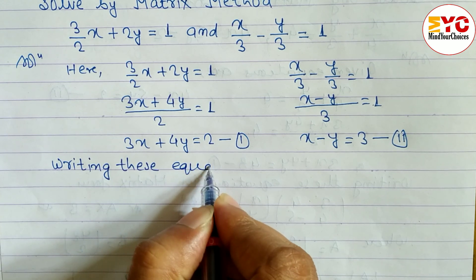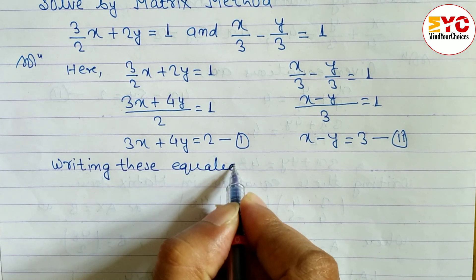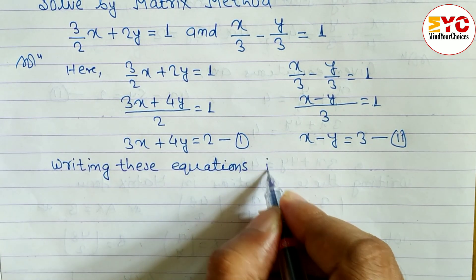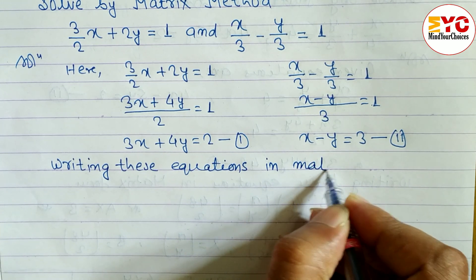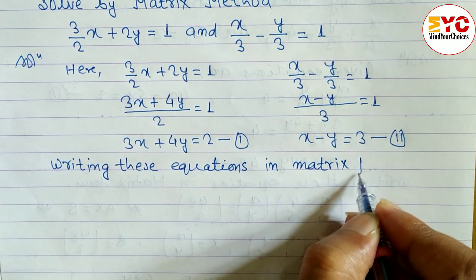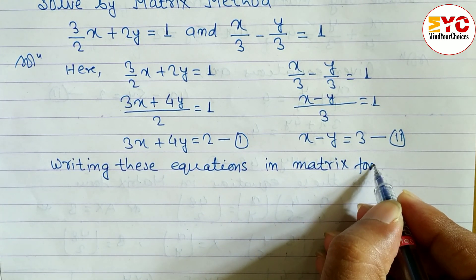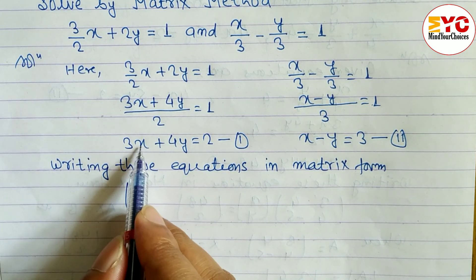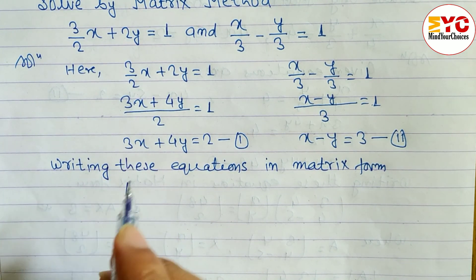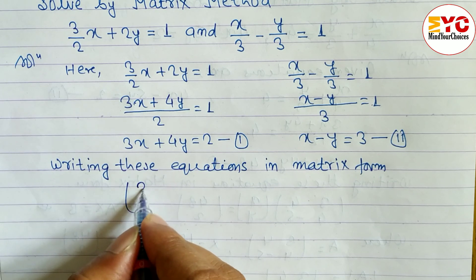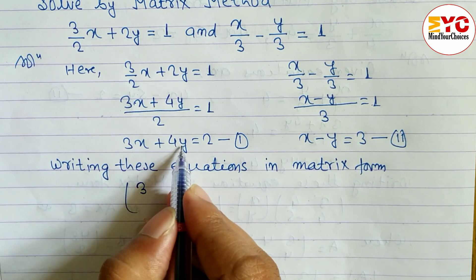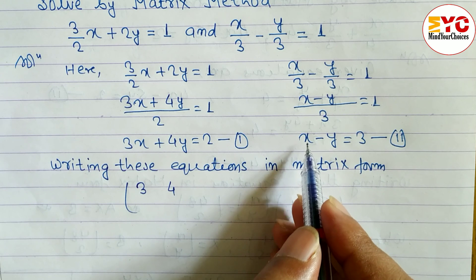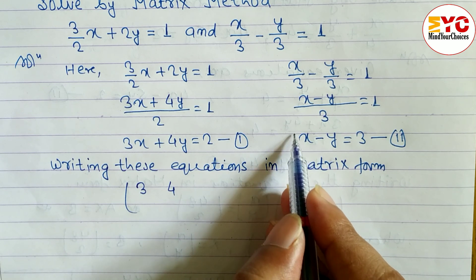Now we have to write both equations in matrix form. For any equation, we write the coefficients in a matrix. From equation 1, the coefficient of x is 3 and the coefficient of y is 4. So we write 3 and 4 in the first row.